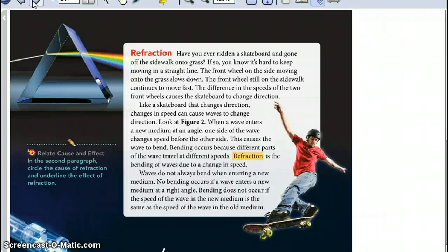Waves do not always bend when entering a new medium. No bending occurs if a wave enters a new medium at a right angle. Bending does not occur if the speed of the wave in the new medium is the same speed of the wave in the old medium.